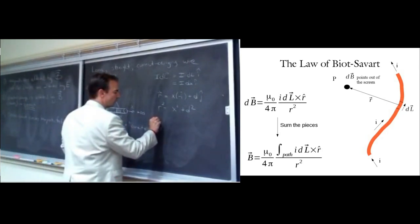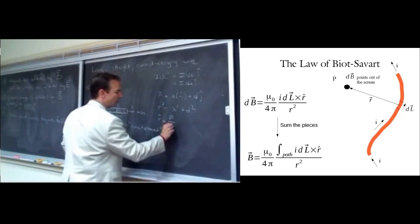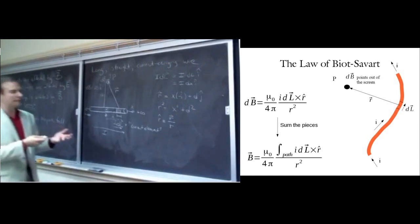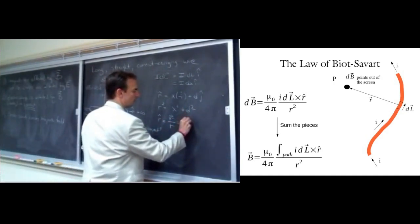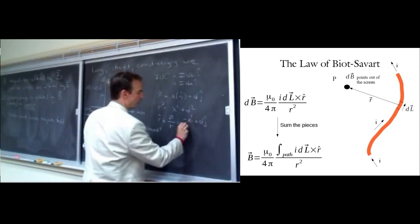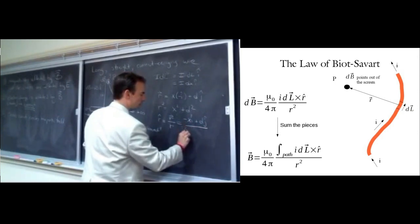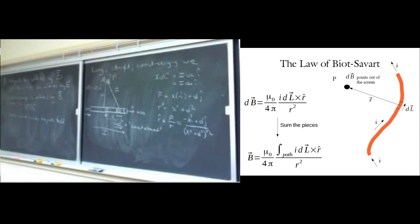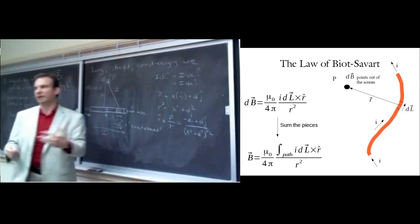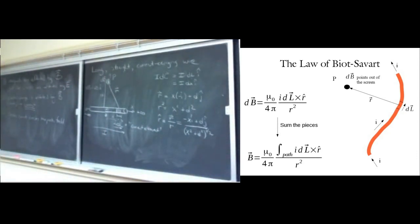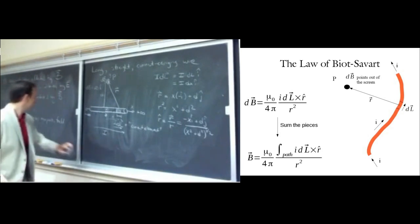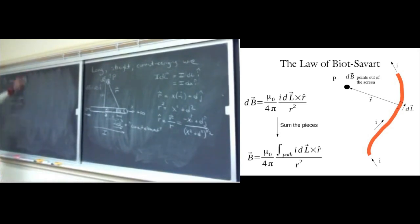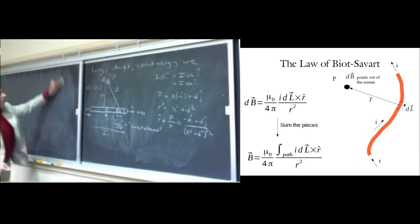If you double your distance away from the wire — going from d to 2d — you cut the strength of the magnetic field in half. So it has a linear 1/d dependence, not inverse square. Similarly, the electric field from a line of charge also falls off linearly with distance. The electric field lines radiate outward from the wire radially, while the magnetic field lines go in circles around the wire — we saw this from experiment.